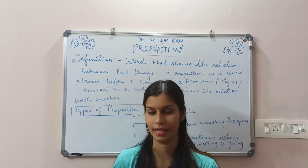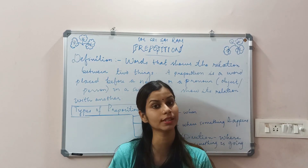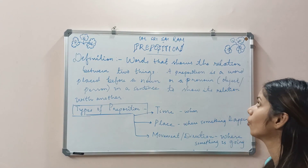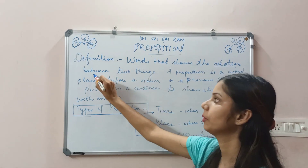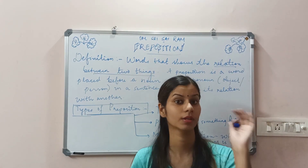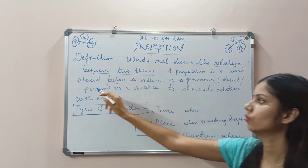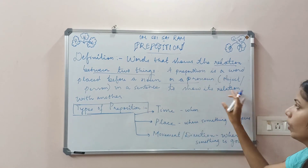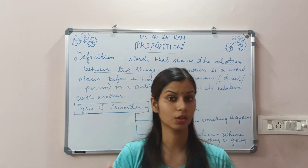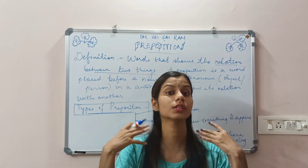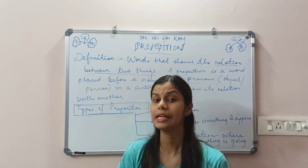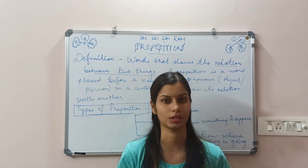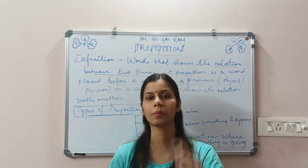So first, let us know the definition of preposition. Preposition woh hai jo relation dikhata hai between two things. A preposition is a word placed before a noun or a pronoun — it may be an object or a person — in a sentence, to show its relation with another thing. The word which gives us the idea and shows the position of a subject or an object, showing the relation between each other, that is known as preposition.